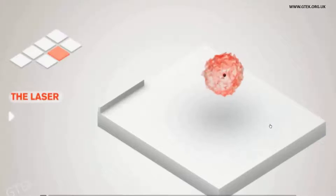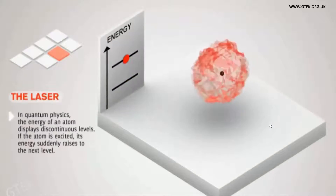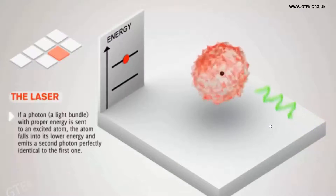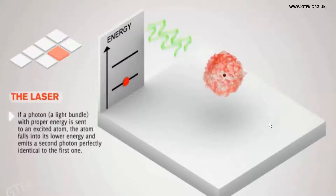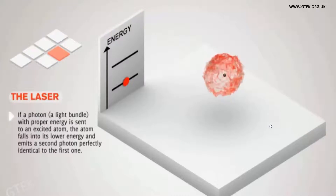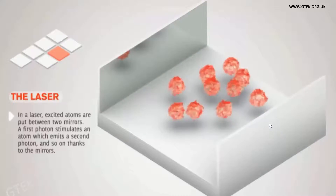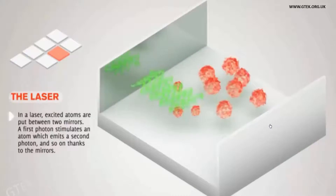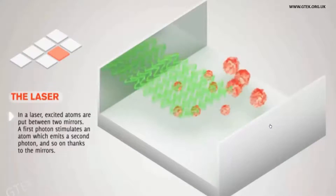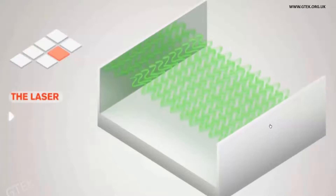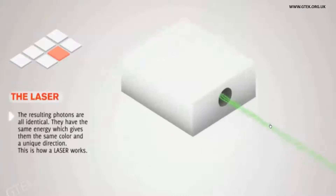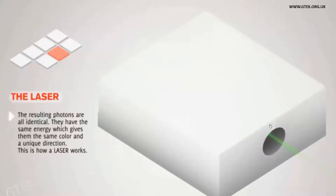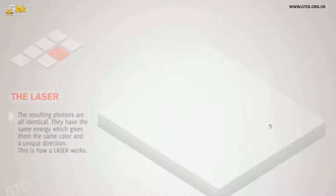Let's see about this even more clearly. This is a kind of energy specification. In general, in quantum physics, we know that energy is considered to be higher and lower. If we consider a laser, the excited atoms are put between two mirrors. A first photon stimulates an atom which emits energy. The resulting photons are identical — they have the same energy, which gives them the same color and unique direction.